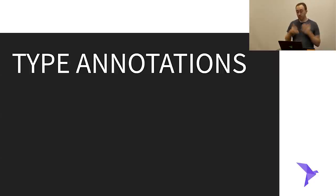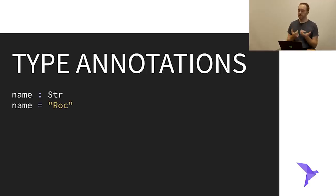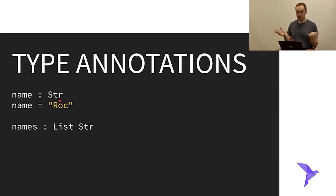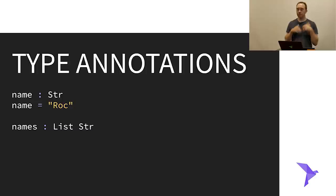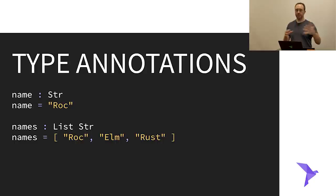Although you don't need type annotations, you can optionally add them. Here's an example: `name : Str` placed right above the declaration `name = "Roc"`. You can also have a standalone annotation like `names : List Str` without a definition yet — Roc will generate a dummy implementation that crashes if used. This is useful when prototyping: just write out the types to sketch an API without implementing it. You can always add the definition later.